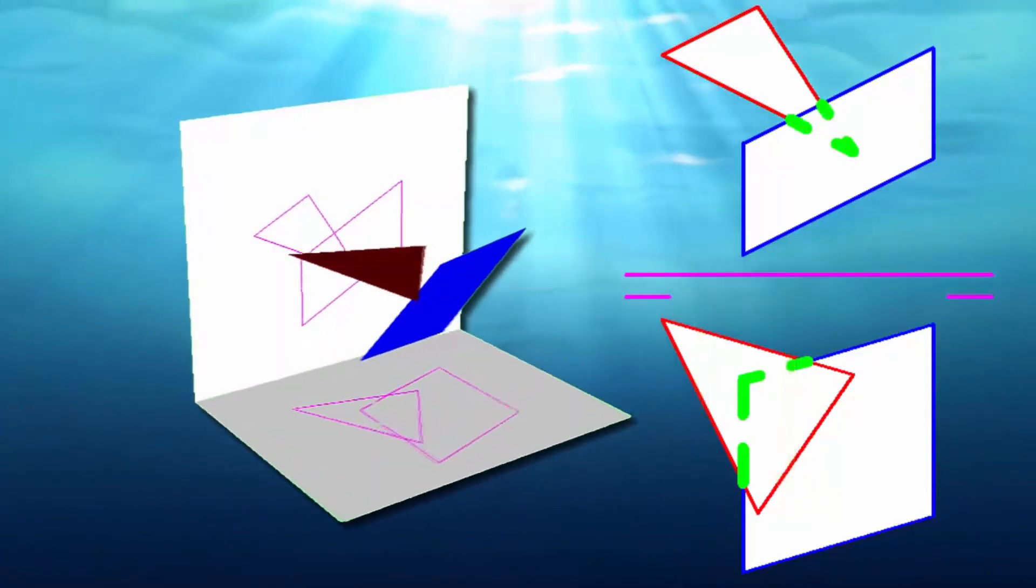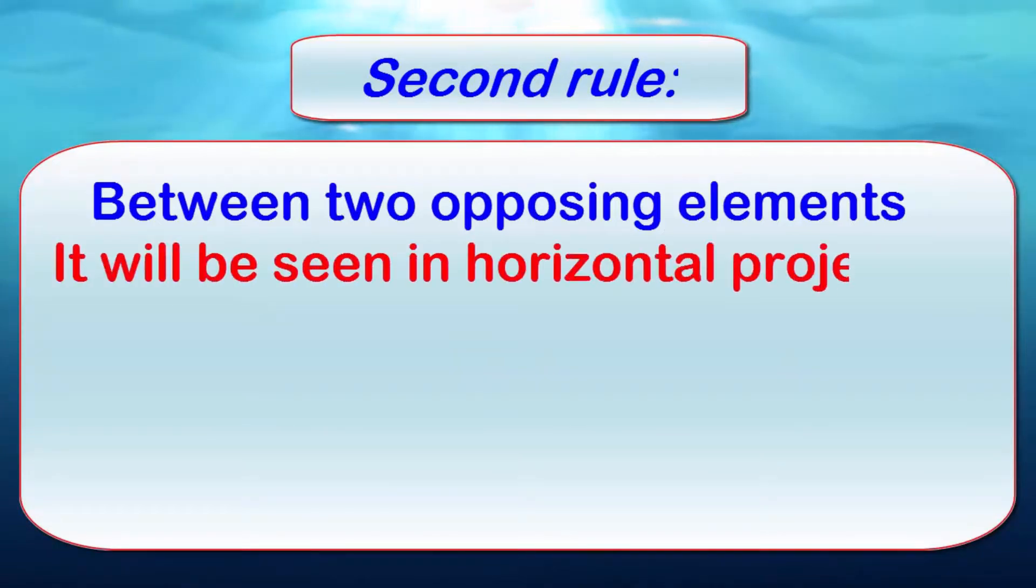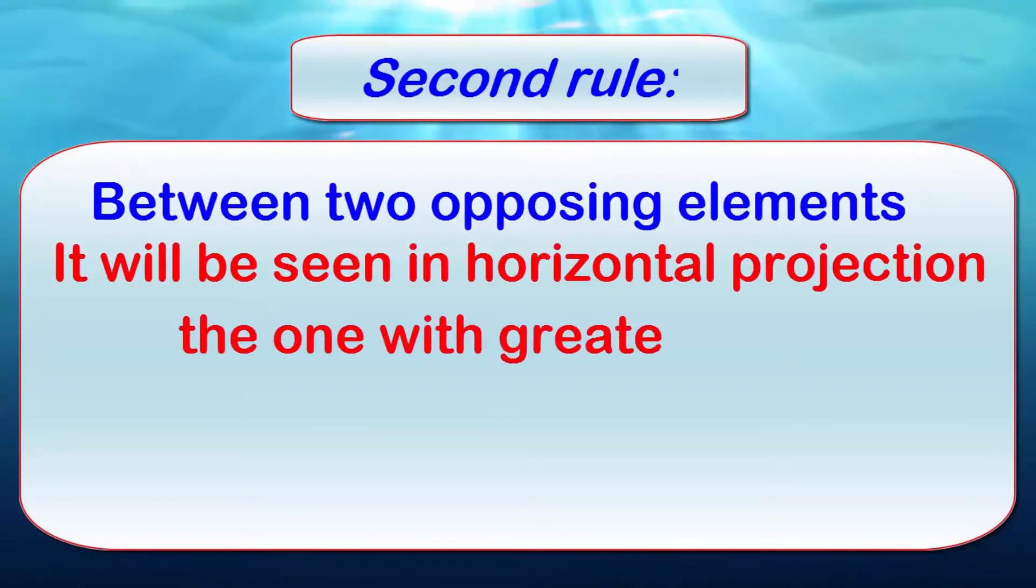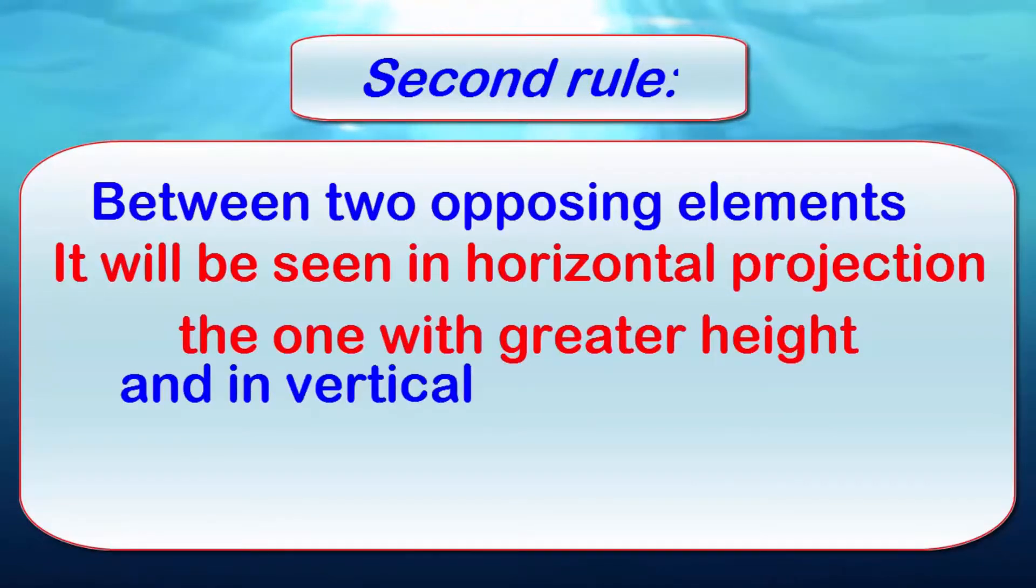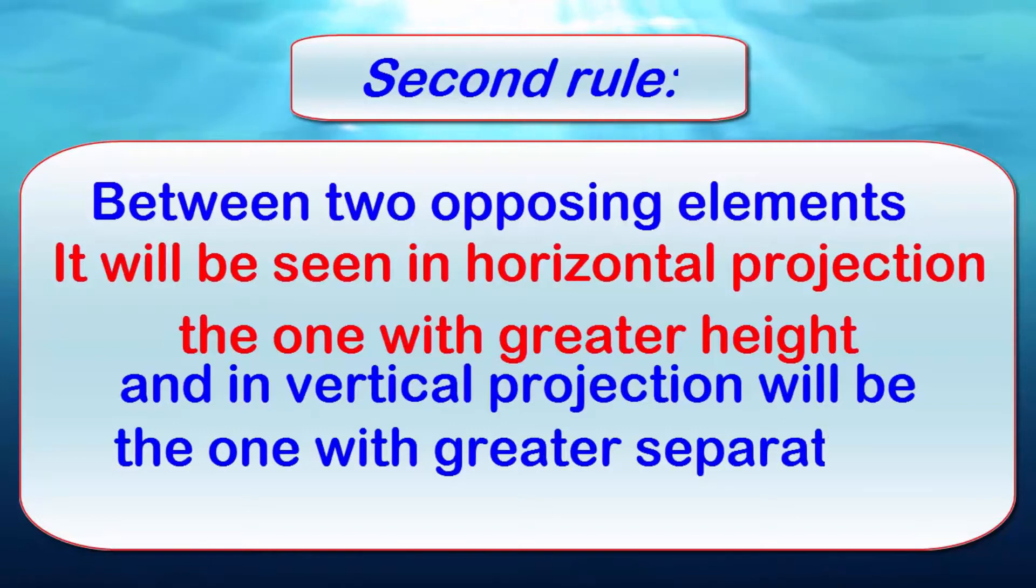So the second rule says between two opposing elements in horizontal projection, will be seen that which has a greater vertical dimension in projection. In vertical projection will be seen that which in horizontal projection has greater separation. If one is seen, the other is hidden.